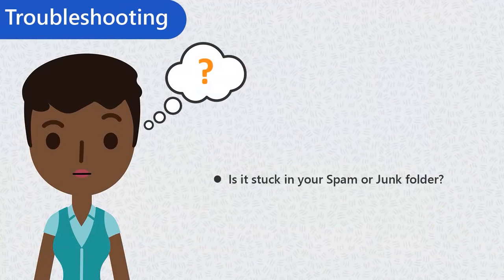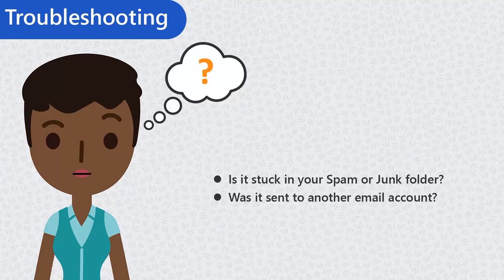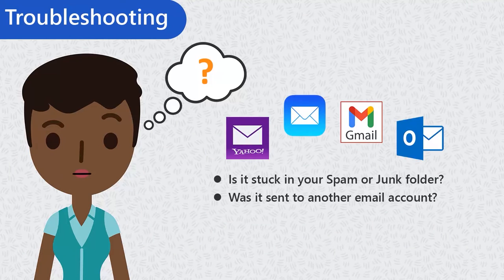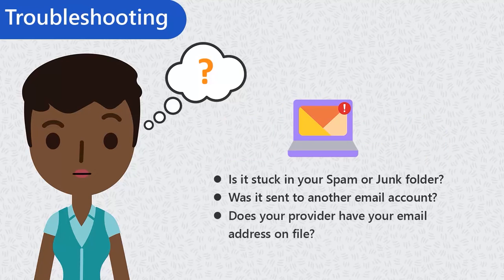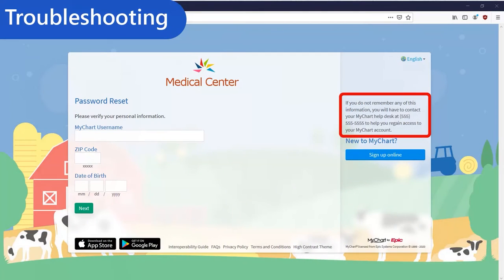If you still don't receive the email, it could be that your account has a different email address on file. If you have multiple email accounts, check one of the others to see if the verification code was sent there instead. If none of your accounts received the email, it could be that your healthcare provider doesn't have an email address on file. If this is the case, it's best to call the number listed on the password reset screen, which will direct you to your provider's MyChart Help Desk for quick support.